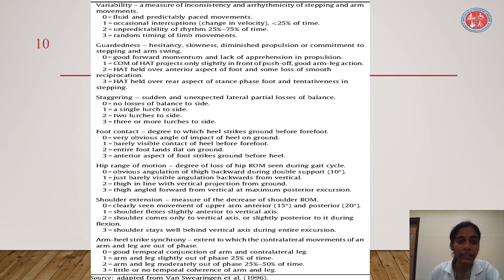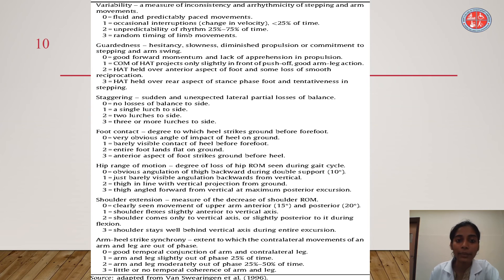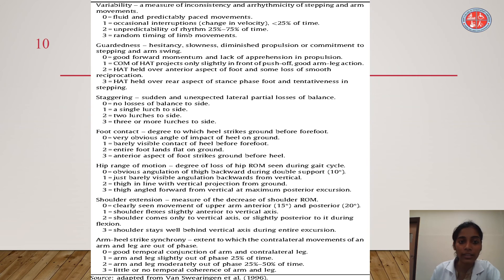The first domain is variability, a measure of inconsistency and arrhythmicity of stepping and arm movement. A score of 0 is fluid and predictable-paced movement; 1 is occasional interruption, less than 25% of the time; 2 is unpredictability of rhythm; and 3 is random timing of limb movement. A video is taken in all directions, this domain is checked, the scoring is calculated, and the total score is summed to determine risk of fall.